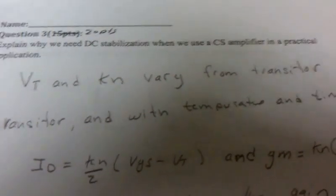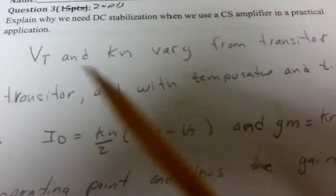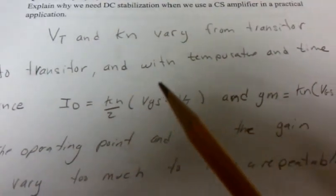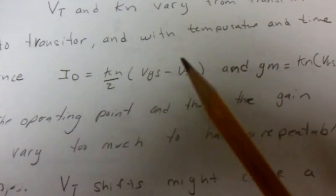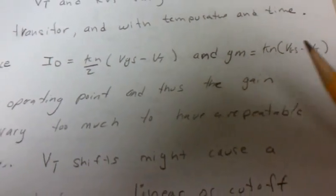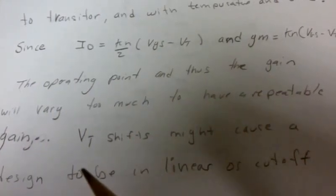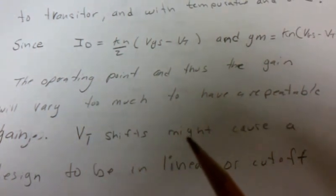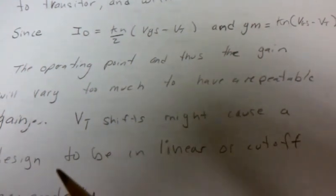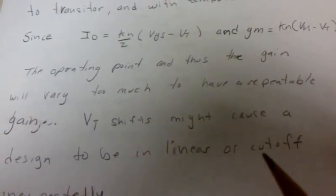Now why do we always assume some sort of DC stabilization? Well, VT and KN vary from transistor to transistor, and also on the same transistor varies with temperature and time. Since the current varies with KN and VT, and GM varies with KN and VT, the operating point and thus the gain will vary too much to have a repeatable gain from circuit to circuit. Also, VT shifts from transistor to transistor over time might cause your design to go into linear if you were biased close to that point, or it might go into cutoff if you were close to that point in an unexpected manner.